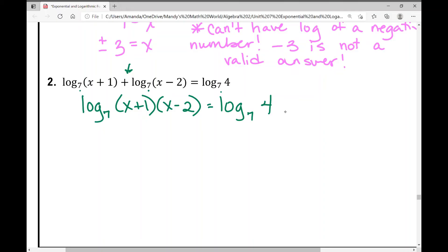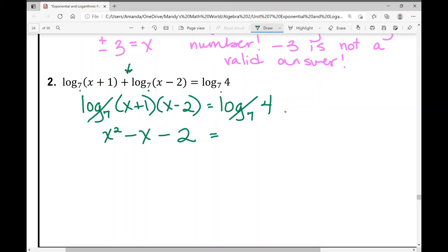Since I have the same base on both sides of the logs, the logs can cancel out and I can set x plus 1 times x minus 2 equal to 4. I'm going to multiply these two binomials. When I do that, I get x squared, then I get negative 2x and positive x which makes negative x, 1 times negative 2 is negative 2 equals 4.